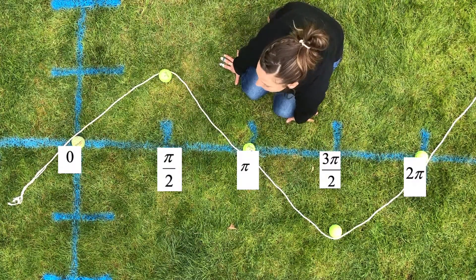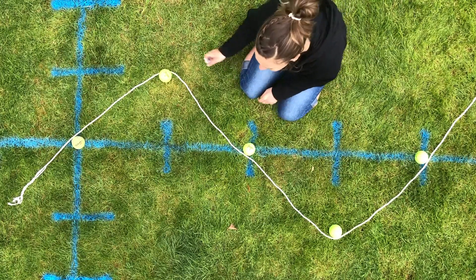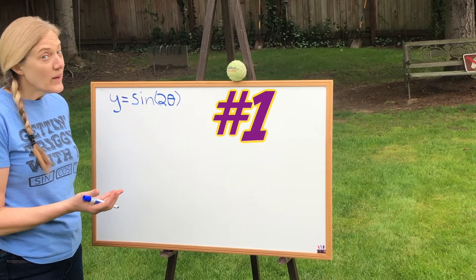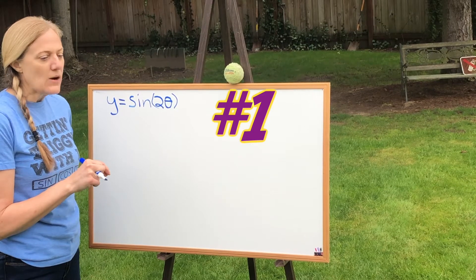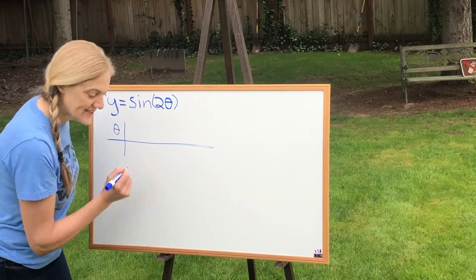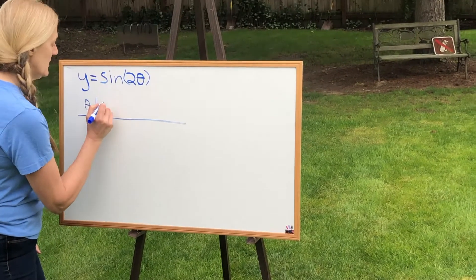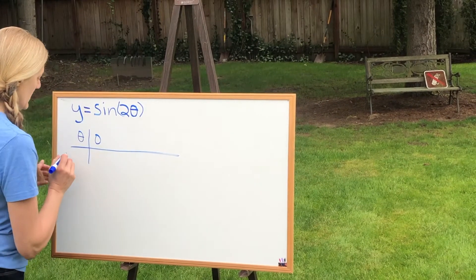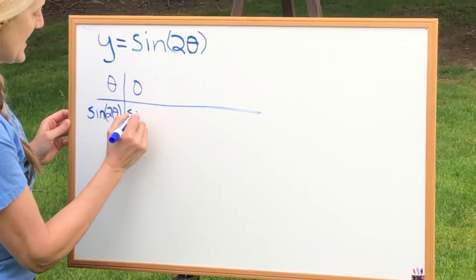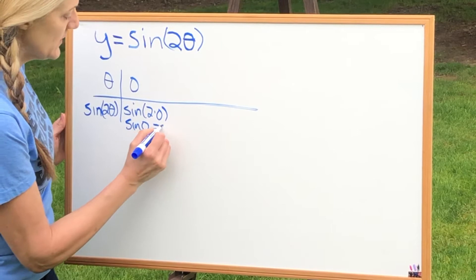What should we graph next, Wilson? Y equals sine of 2 theta? Oh, that one's going to be a little trickier. We might need Mrs. Peart's help on the whiteboard. I think we need to look at what's happening to the points. We also checked out for just sine theta. Wilson, don't leave me to do it by myself! When theta is zero, what is sine of 2 theta? So then that would be sine of 2 times zero, which is sine of zero, which we know is zero.